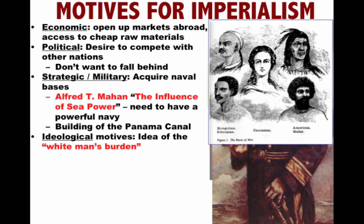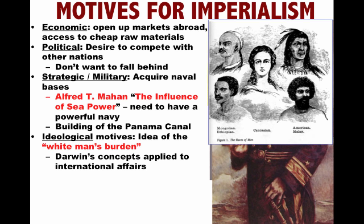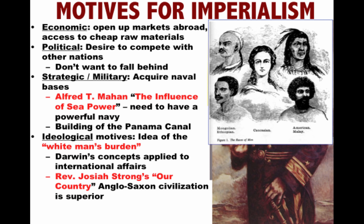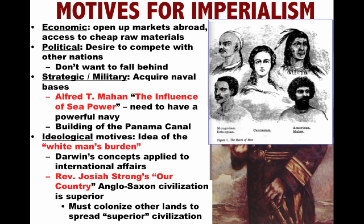There are also ideological motives. In the world of business, people are talking about ideas like social Darwinism and survival of the fittest. There's the idea of the white man's burden — people are using Charles Darwin's concepts and applying them to international affairs. The Reverend Josiah Strong wrote Our Country, talking about how Anglo-Saxon civilization is superior and how Protestant Americans need to spread their values and civilization to the rest of the world. These ideas were used to justify colonizing other lands.